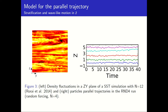In stratified turbulence we have the development of layers in the planes parallel to the stratification. What you see here is the density fluctuations in a parallel plane of a stable stratified turbulence simulation, and here some trajectories in the parallel plane — or we can think of these as the altitude of the particles. The dynamics is dominated by a wave-like motion and particles oscillate in layers which they do not leave. In consequence, there is little dispersion in the vertical direction.